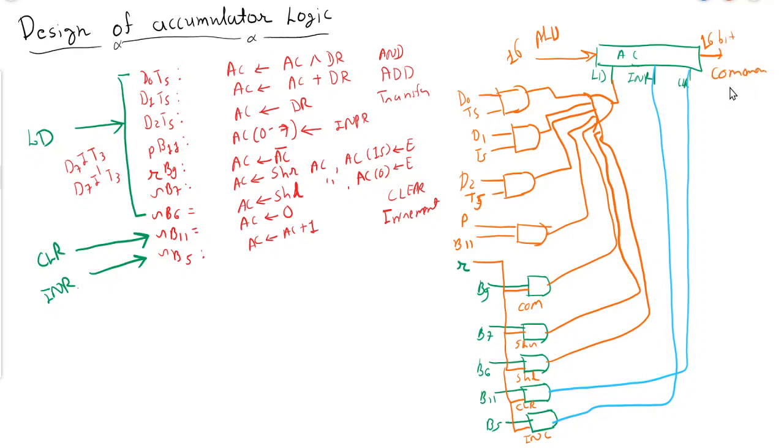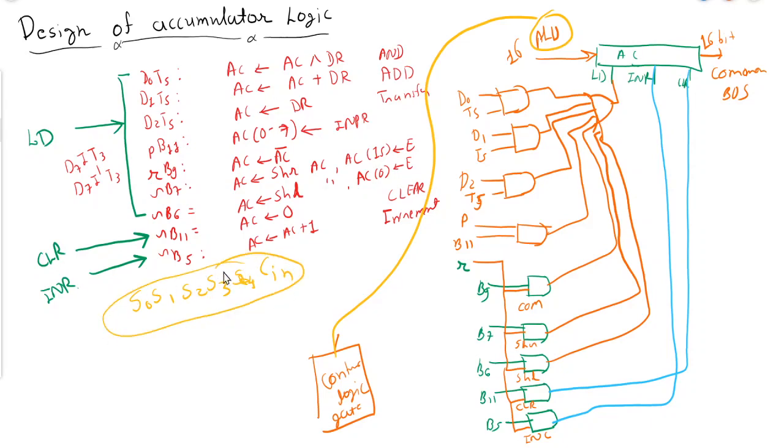Okay, by default there will be a 16-bit input from ALU accumulator and 16-bit output will be there for common bus. This is how we can design the accumulator. Now we have discussed that there was a control logic gate in timing and control unit. So those control logic gate inputs will be given to this 16-bit ALU. If you try to recall the arithmetic logic shift unit, there was a total five selection inputs: S0, S1, S2, S3, and I think C-in was there. So those selection inputs will be given by control logic gate for various conditions. Clear? This is how we can implement the design of accumulator logic.